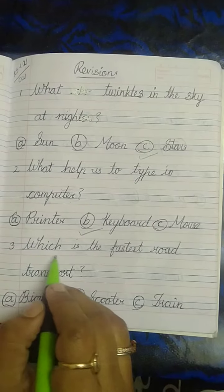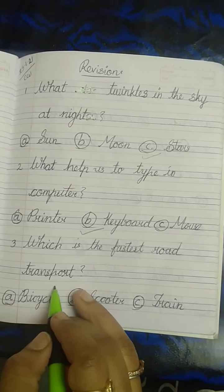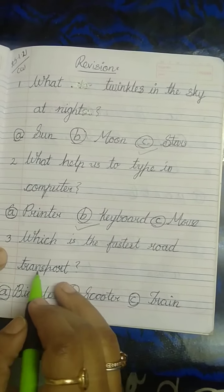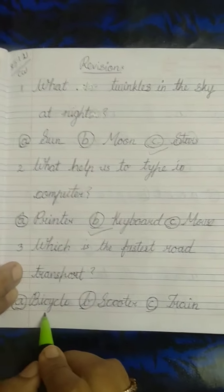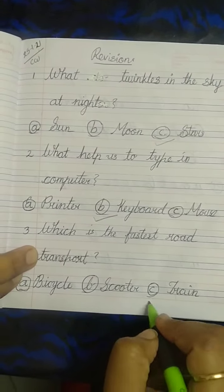Third question is, which is the fastest road transport? Which is the fastest road vehicle? Bicycle? No. Scooter? No. Train? Yes.